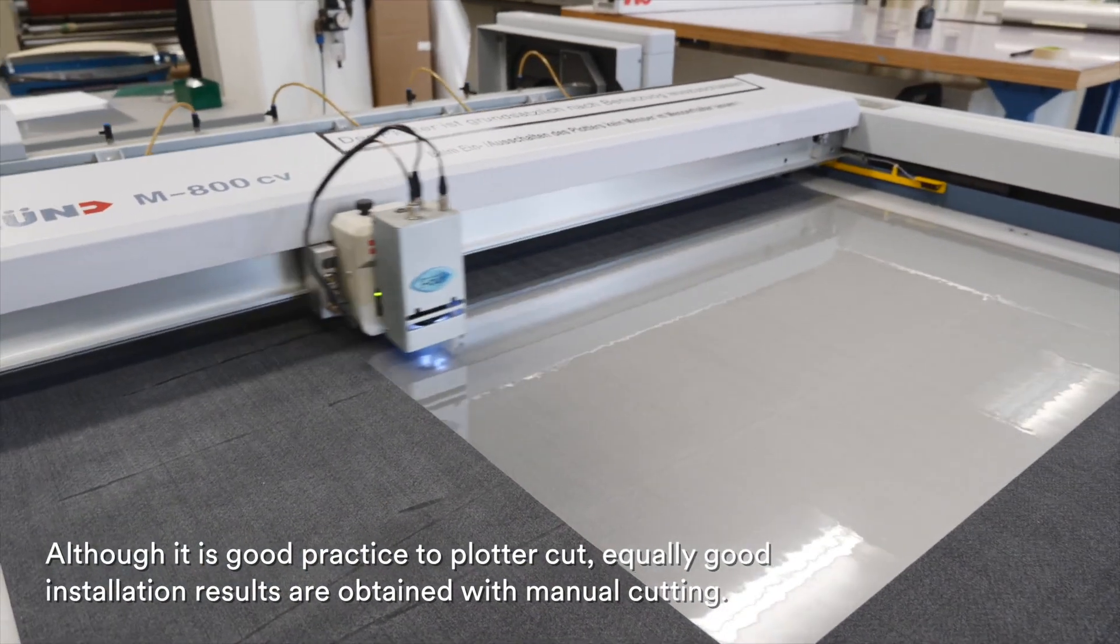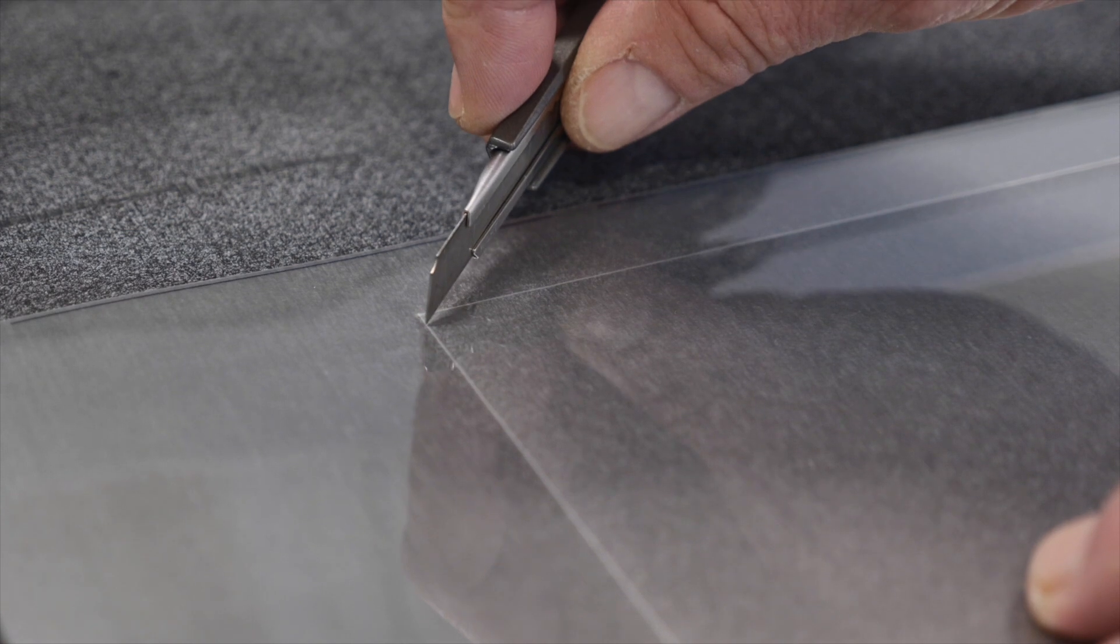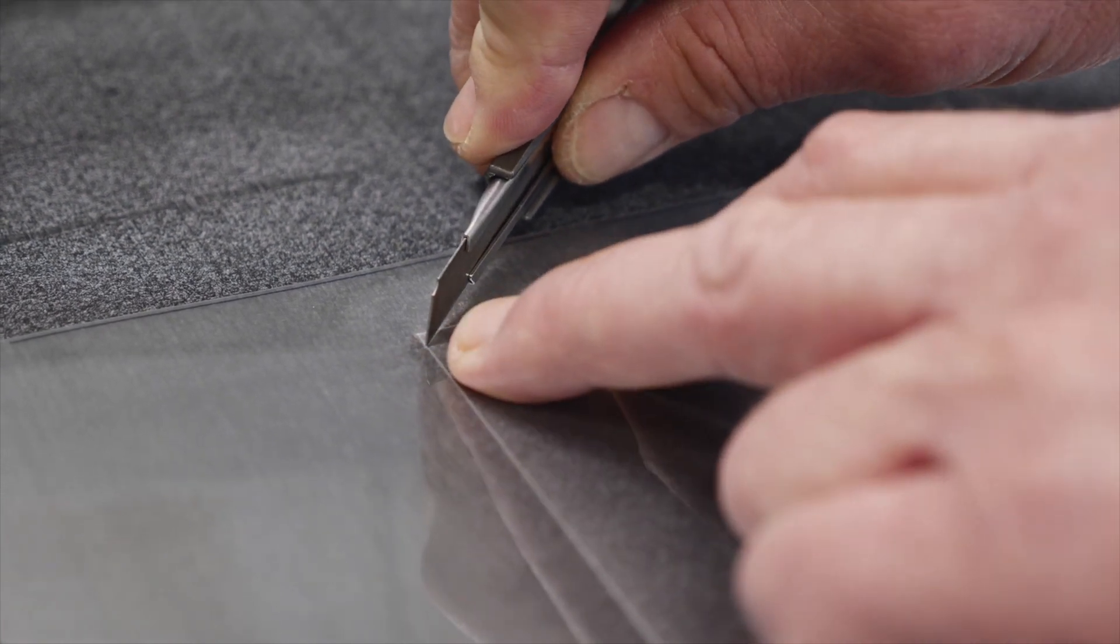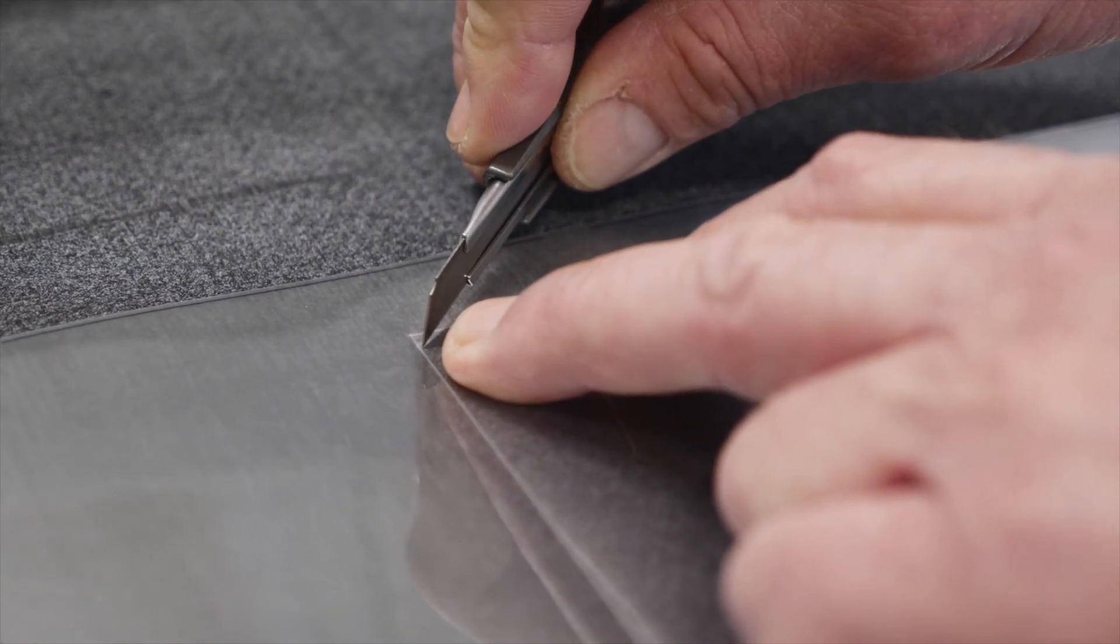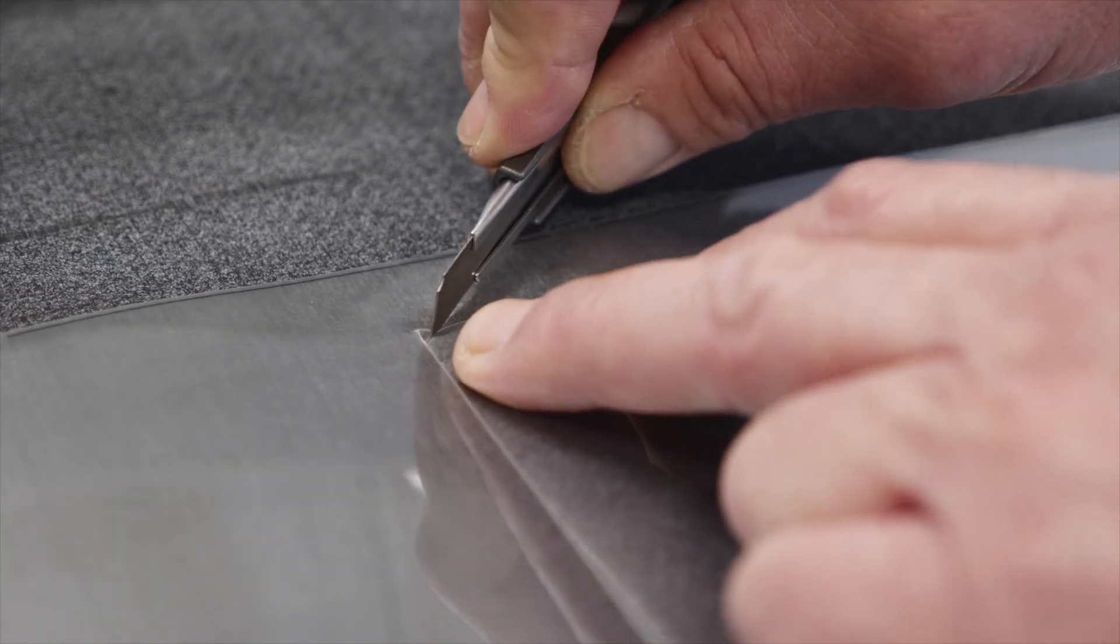Once the film is cut to size, create a small notch in the top left-hand corner on the edge with the black line. This is to maintain correct orientation when the liner has been removed.